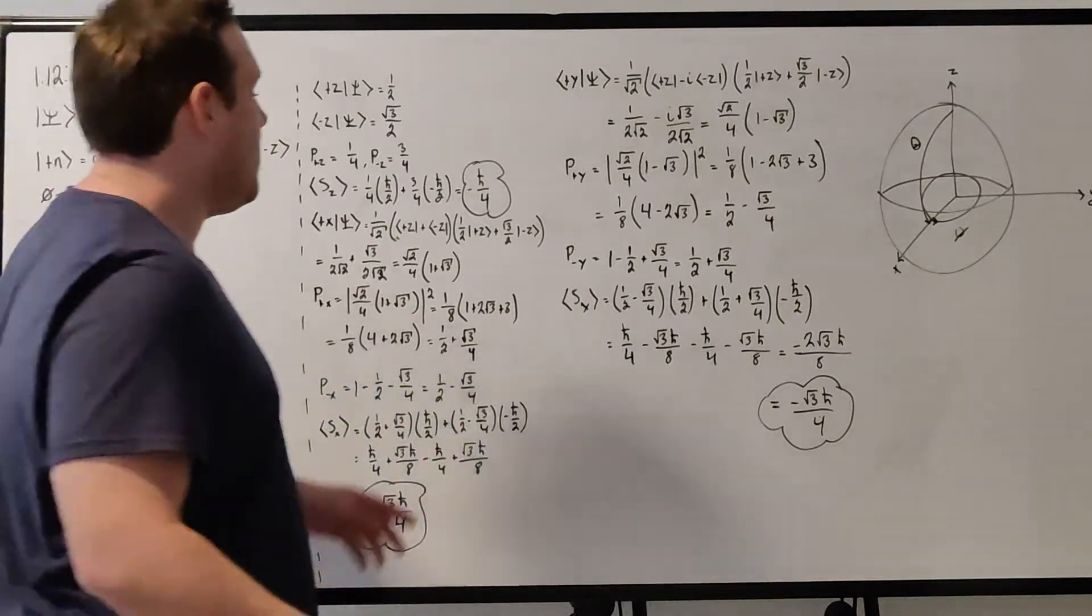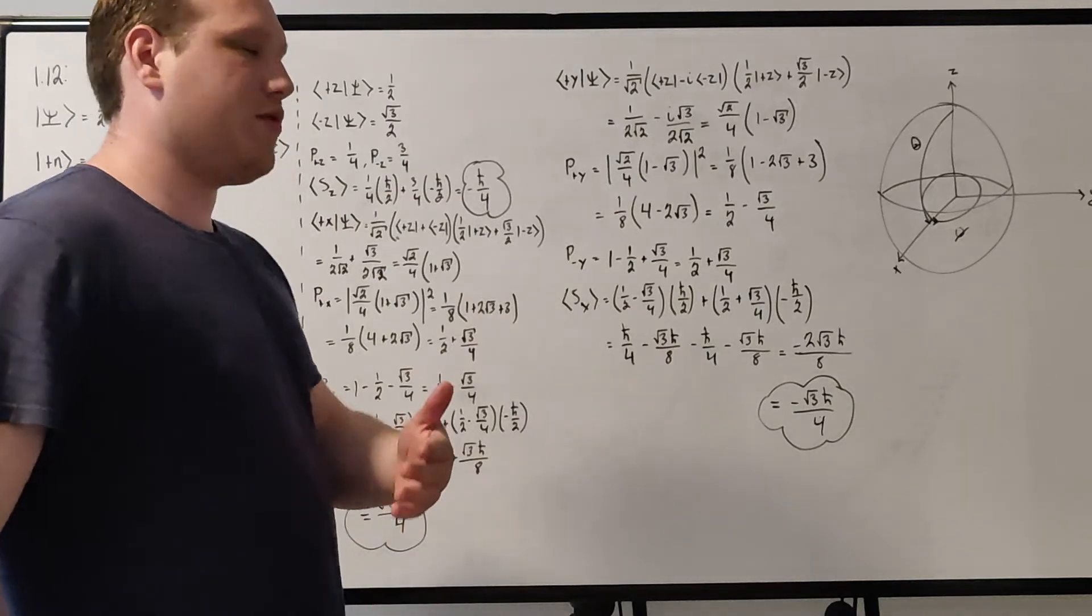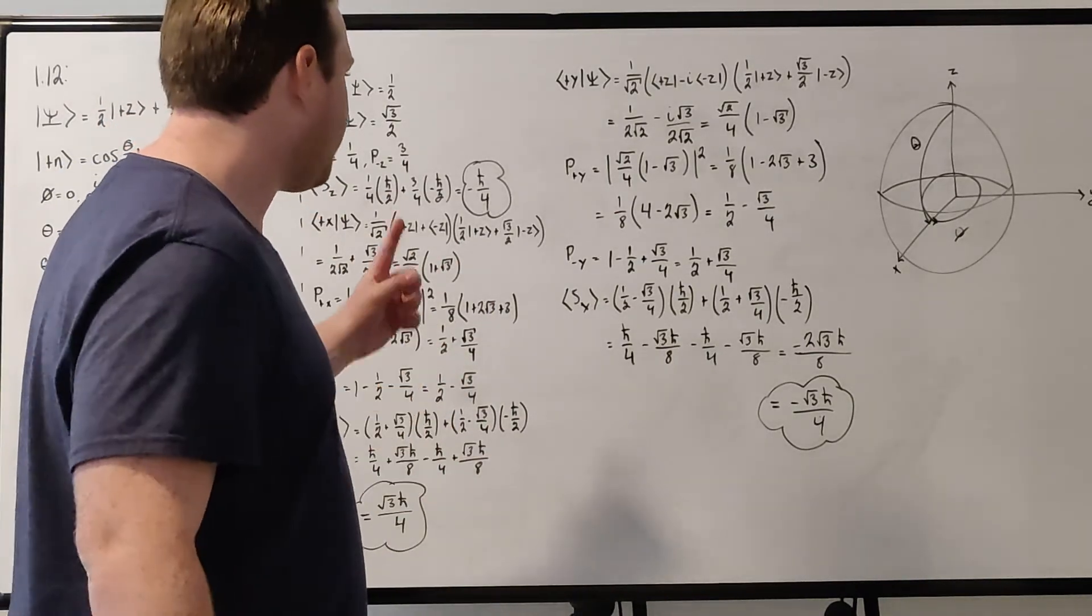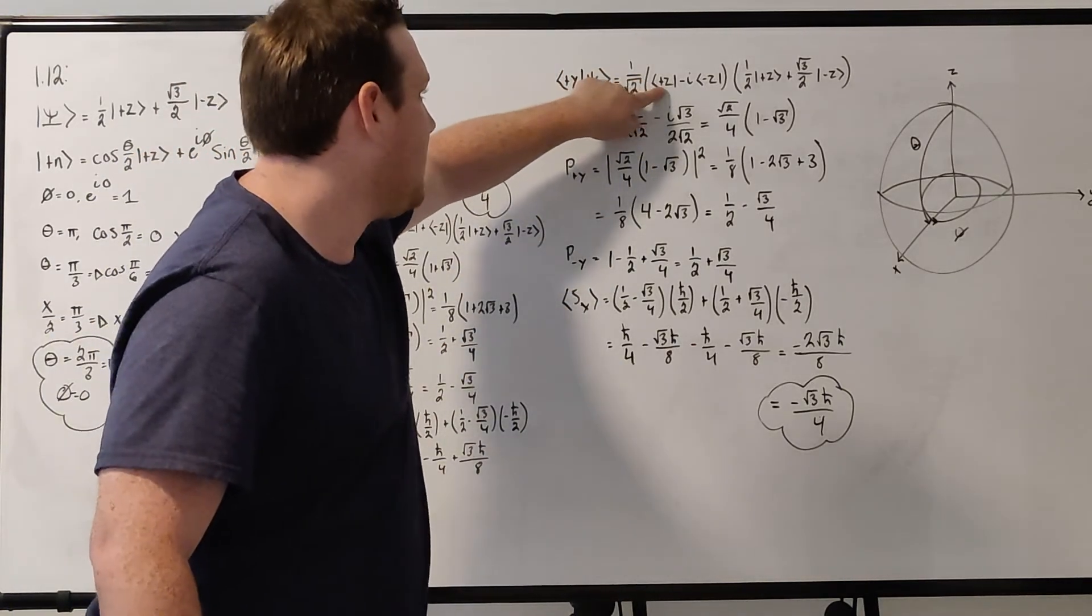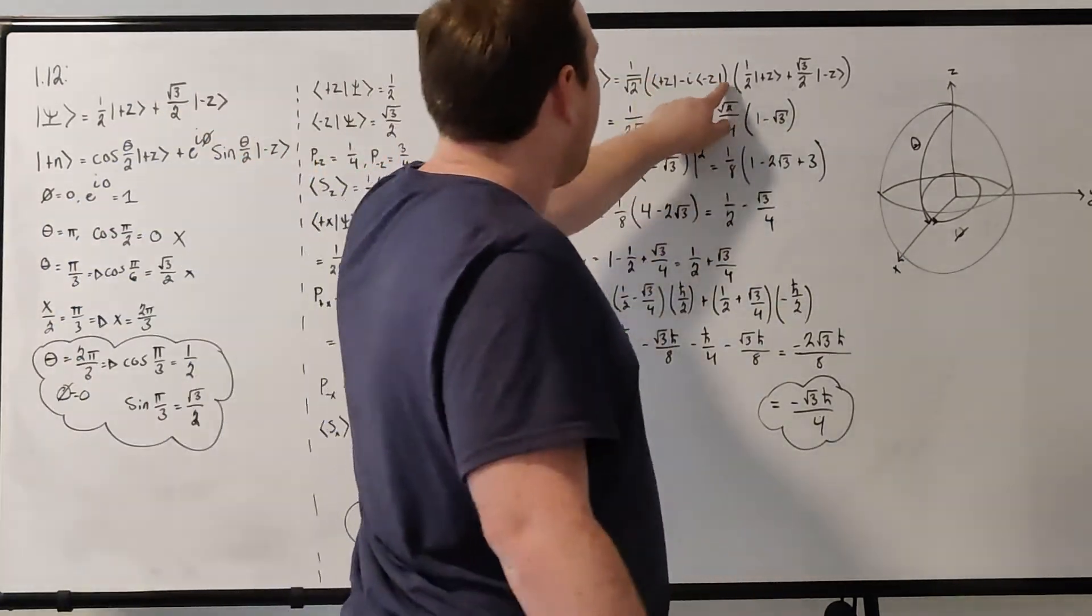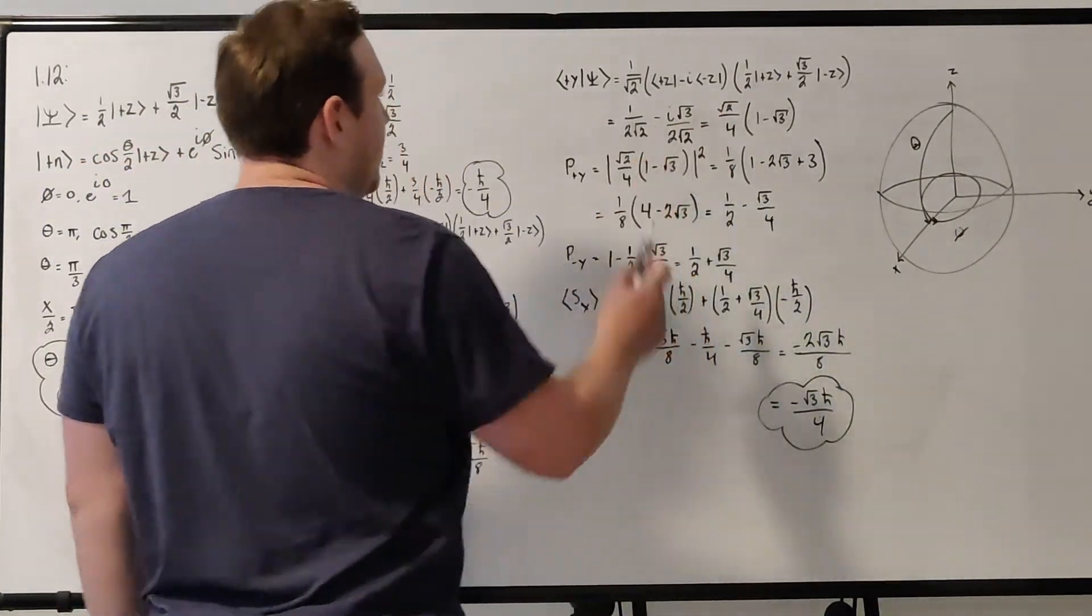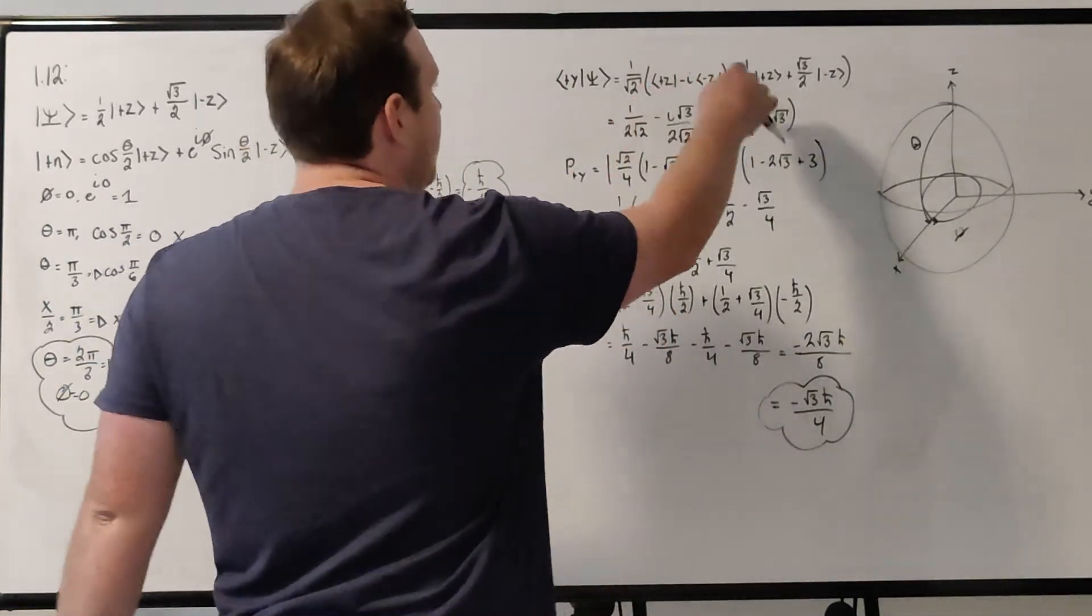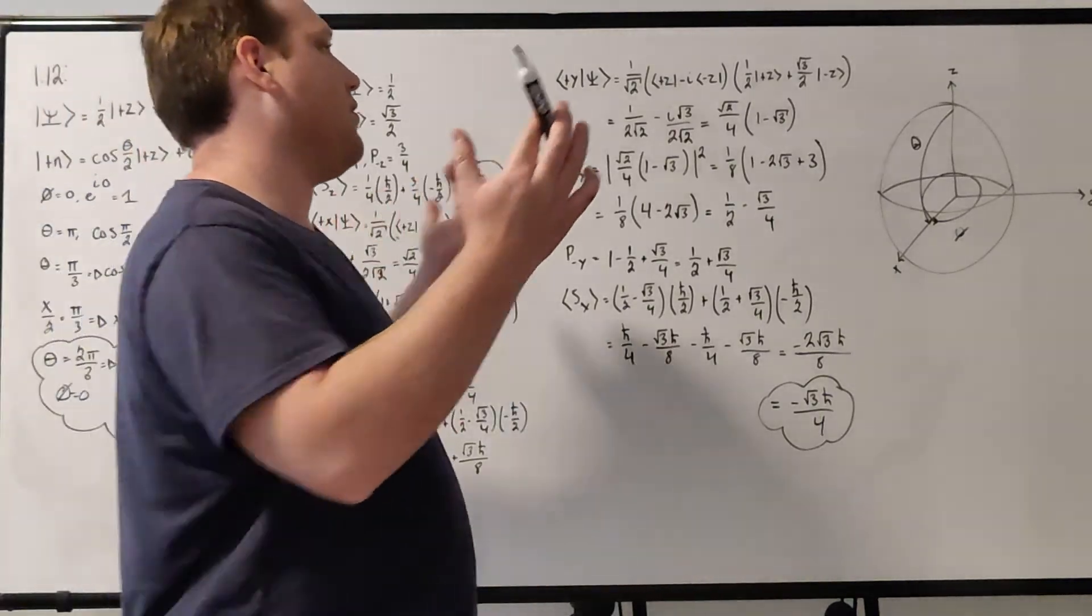Let's do the y. Again, just going to do plus y. We can find the minus y state by subtracting the minus y probability by subtracting from 1. But the bra version of plus y is 1 over root 2 times plus z minus i minus z, where those are the bra forms, times our state psi. So we get 1 over 2 root 2 minus i root 3 over 2 root 2 when we multiply that through. Again, remember, plus z minus z are orthogonal, so the inner products of those are 0, so the inner terms cancel.